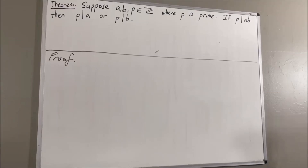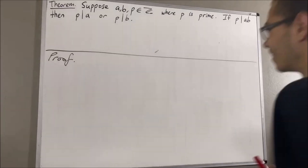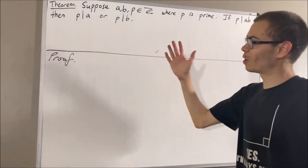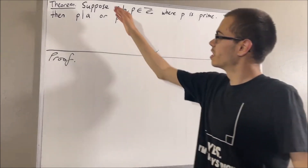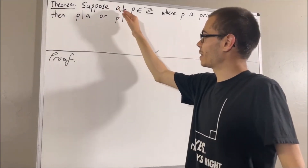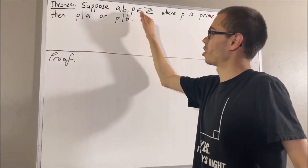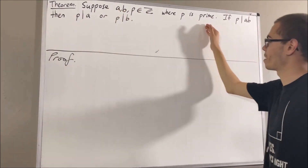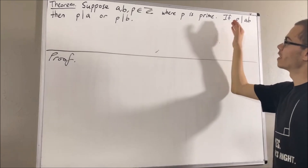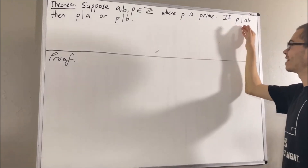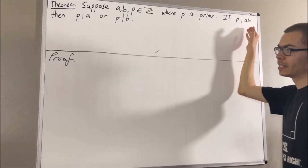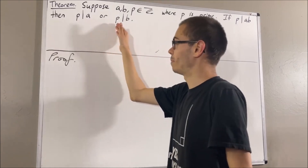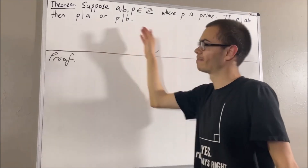Hello! In this video, we are going to prove the following theorem. Suppose a, b, and p are integers, where p is prime. If p divides ab, then p divides a, or p divides b.